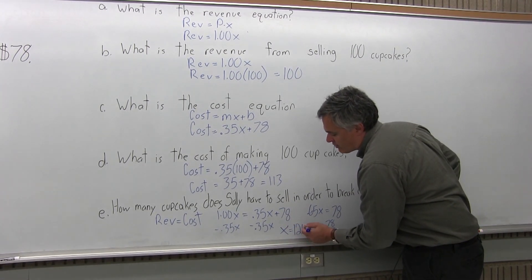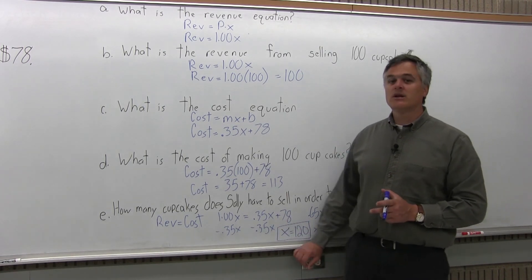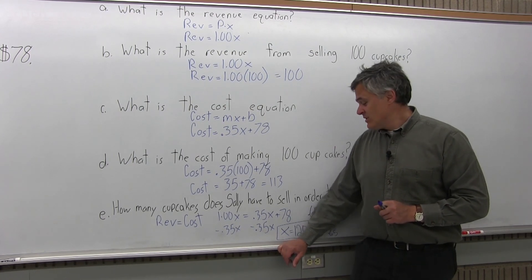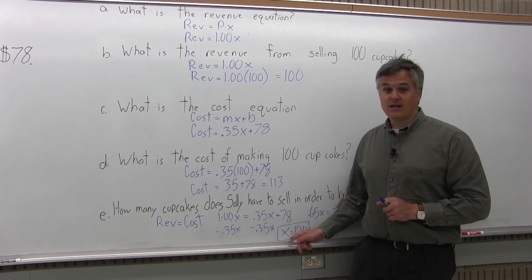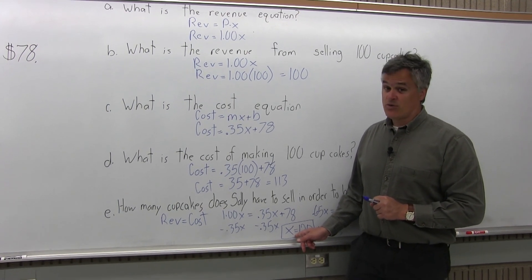So in order to break even, Sally needs to sell 120 cupcakes. Now it's never your goal to just break even. You want to know how many you have to sell in order to break even, so you want to sell a lot more than 120.